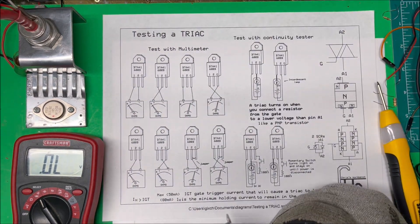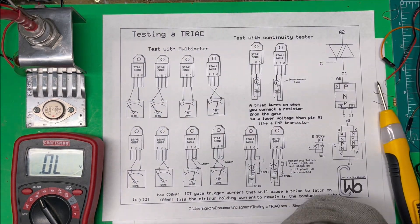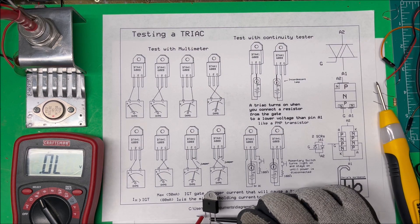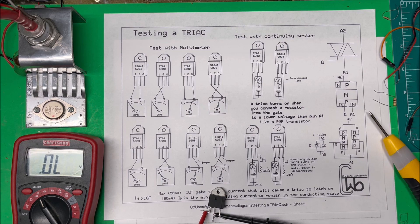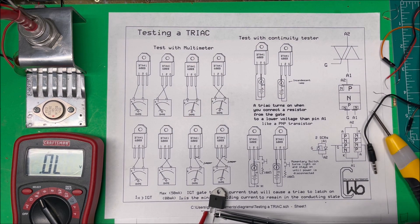And then let's go from pin 1 to pin 2 and put a jumper between pin 2 and the gate here.